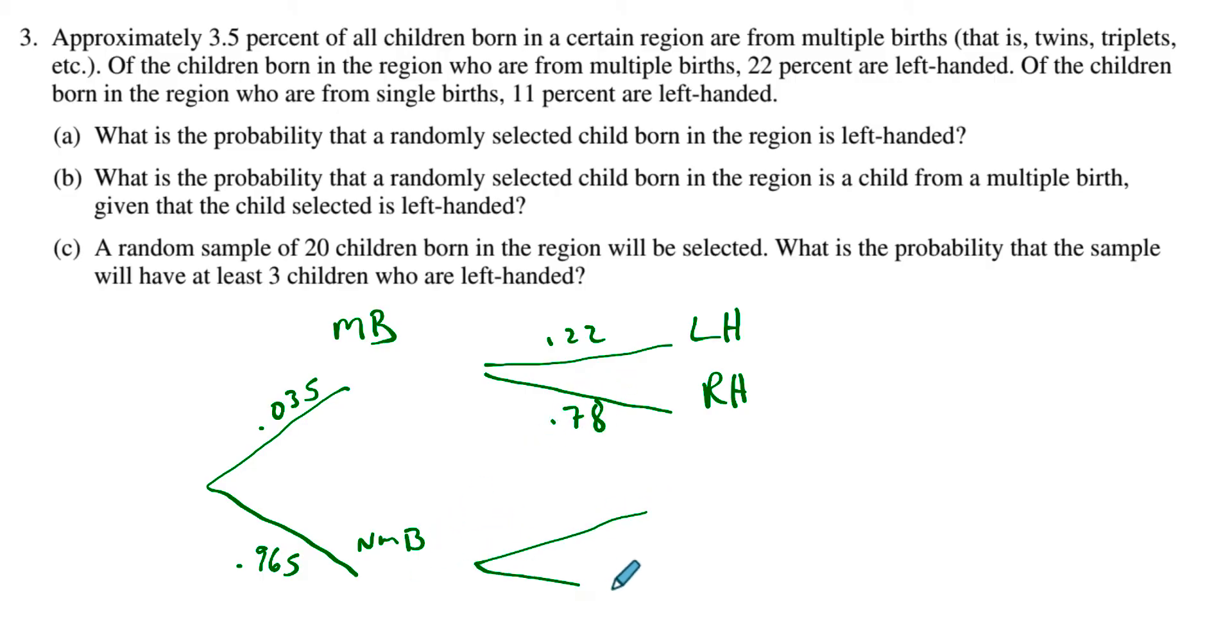For the general population, not multiple births, 11% are left-handed. So that means 89% are right-handed, or not left-handed. So first thing I would do is, when I'm doing a tree diagram, I always like to figure out the probability of each branch happening independently of the others. So I'm going to multiply through all of these different probabilities.